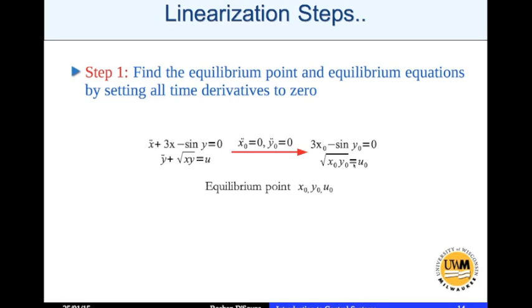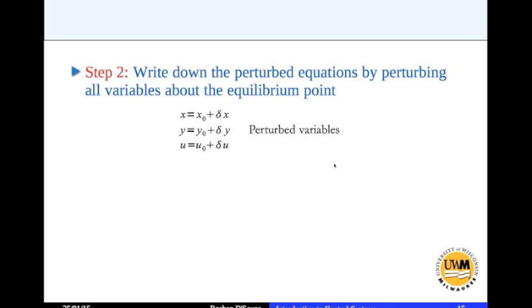The second step is to find the perturbed equation. So what do you do? You slightly disturb x about x0, y about y0 and u about u0. So the slight disturbance is a small displacement delta x, for y it is small displacement delta y and for the input u is small displacement delta u.